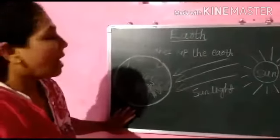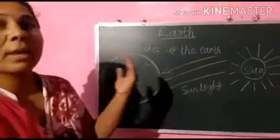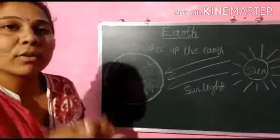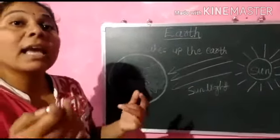Earth is made up of land, water and air. Our earth is covered with three-fourths of water and one-fourth of land.